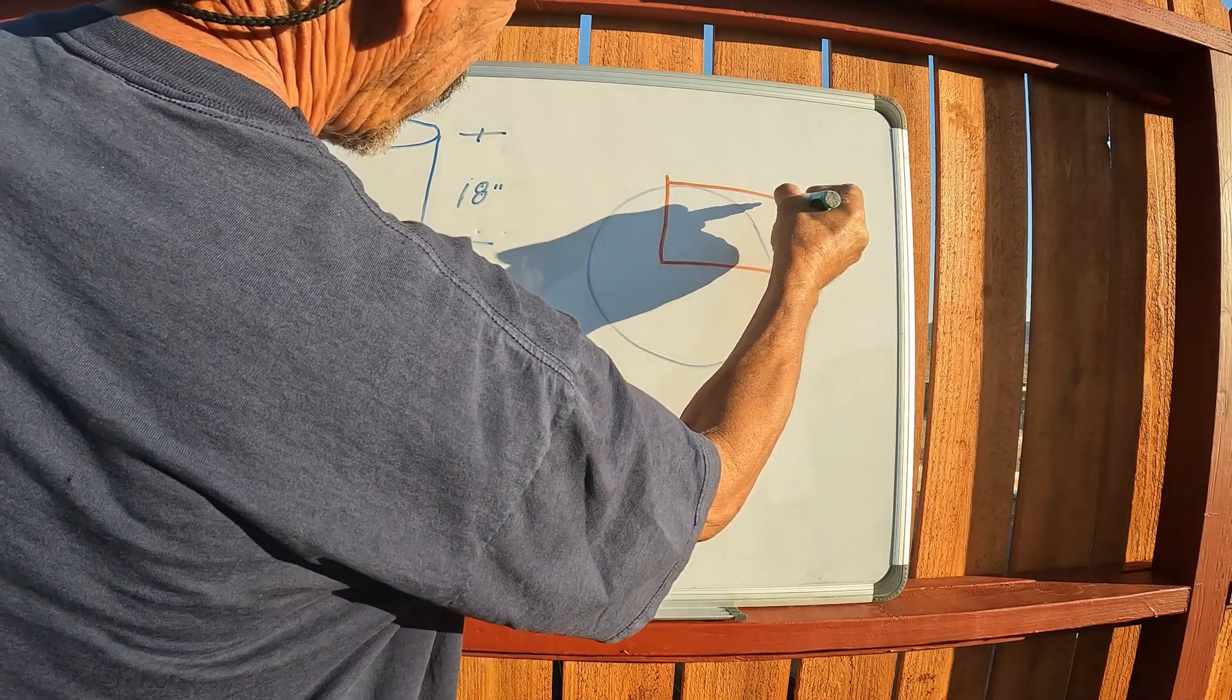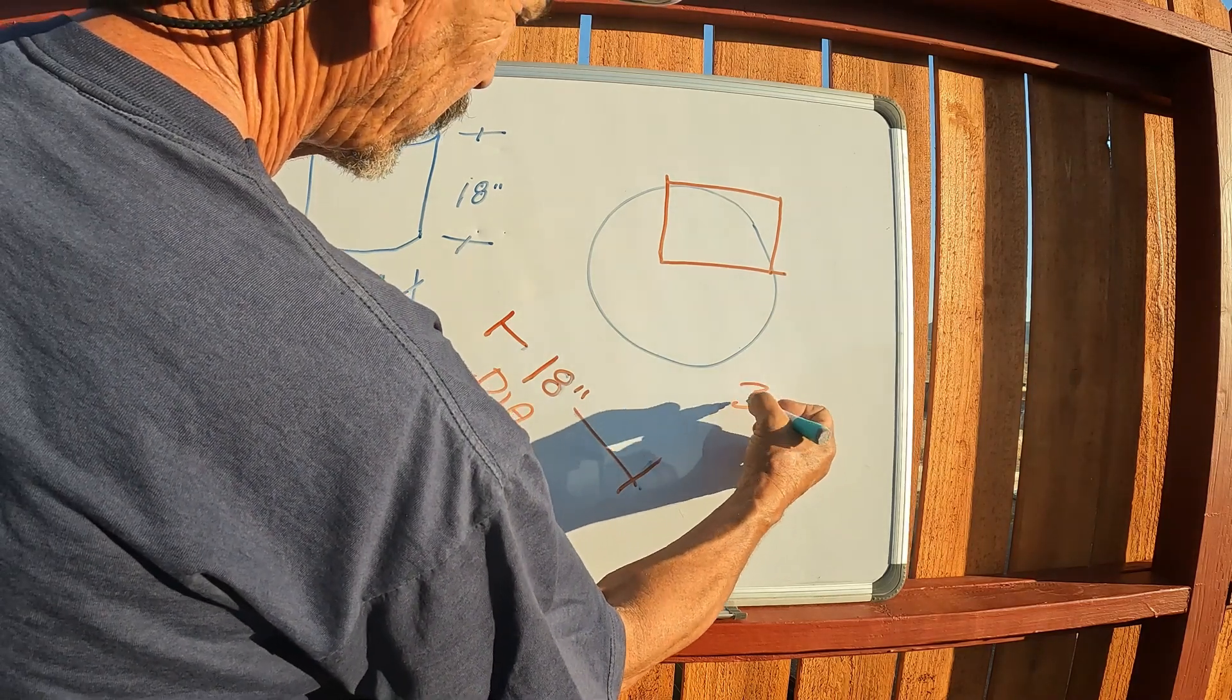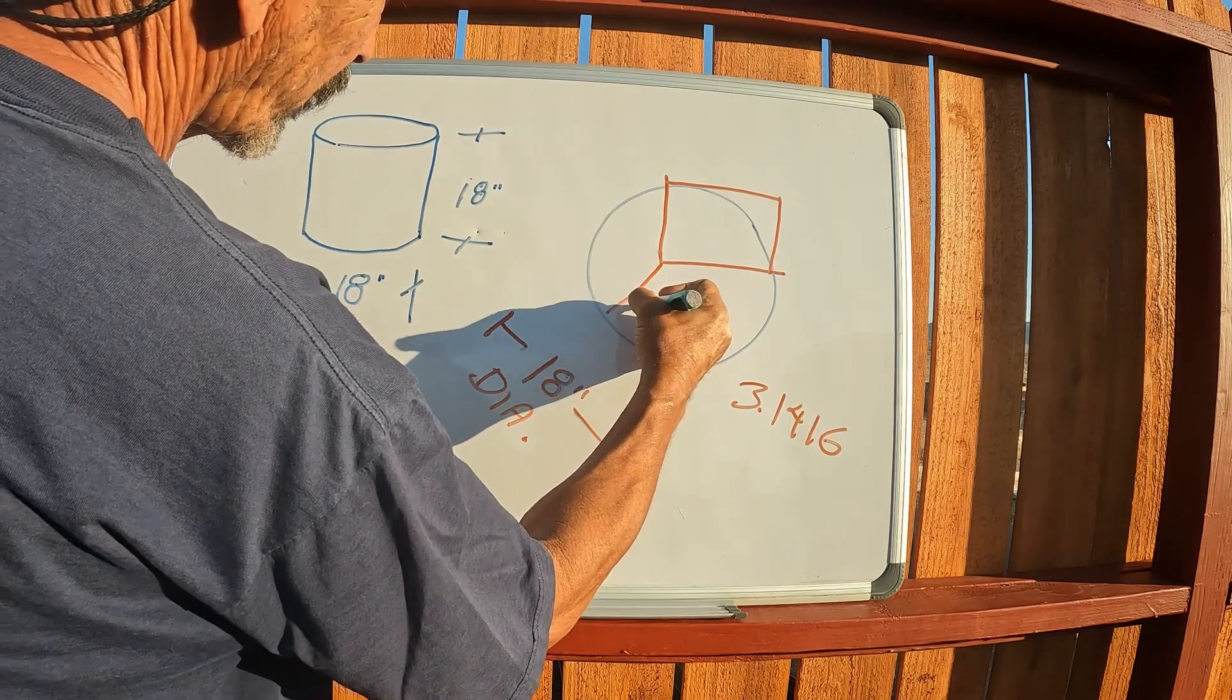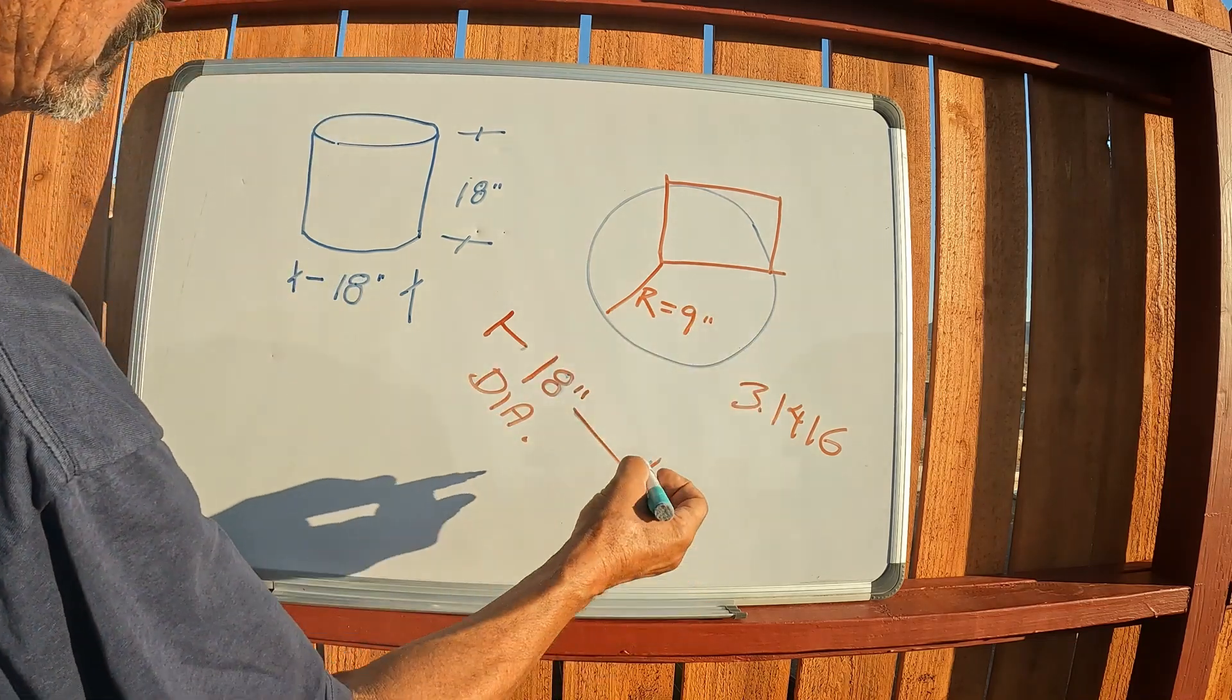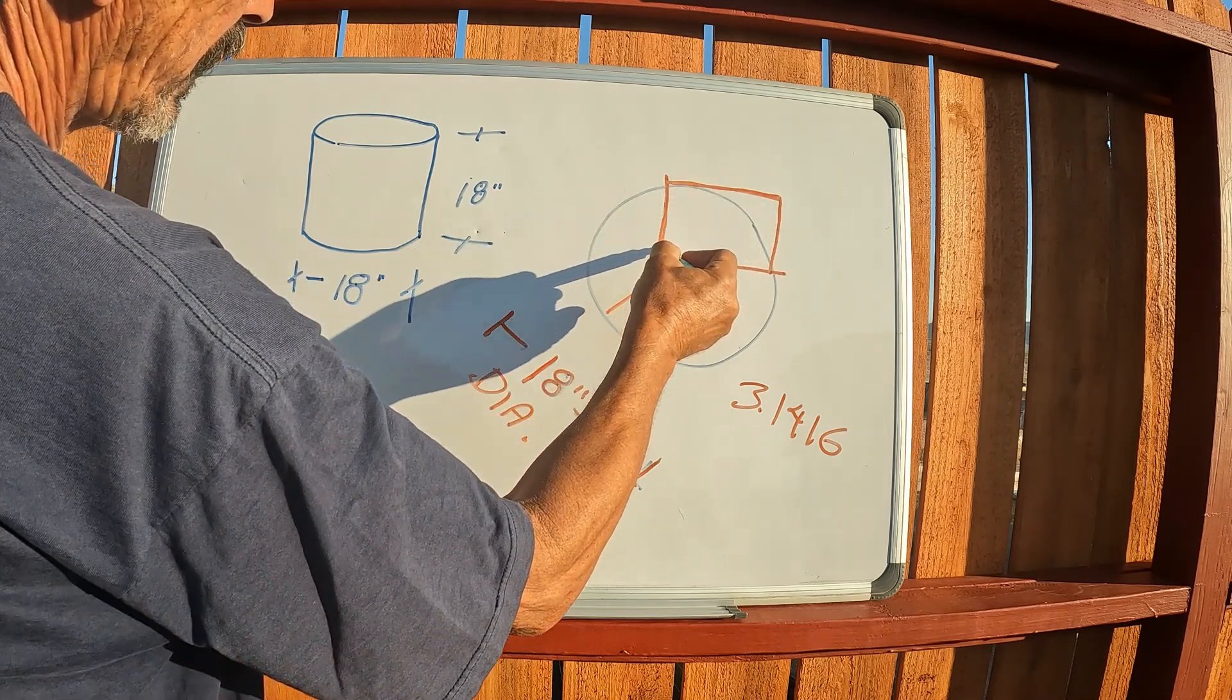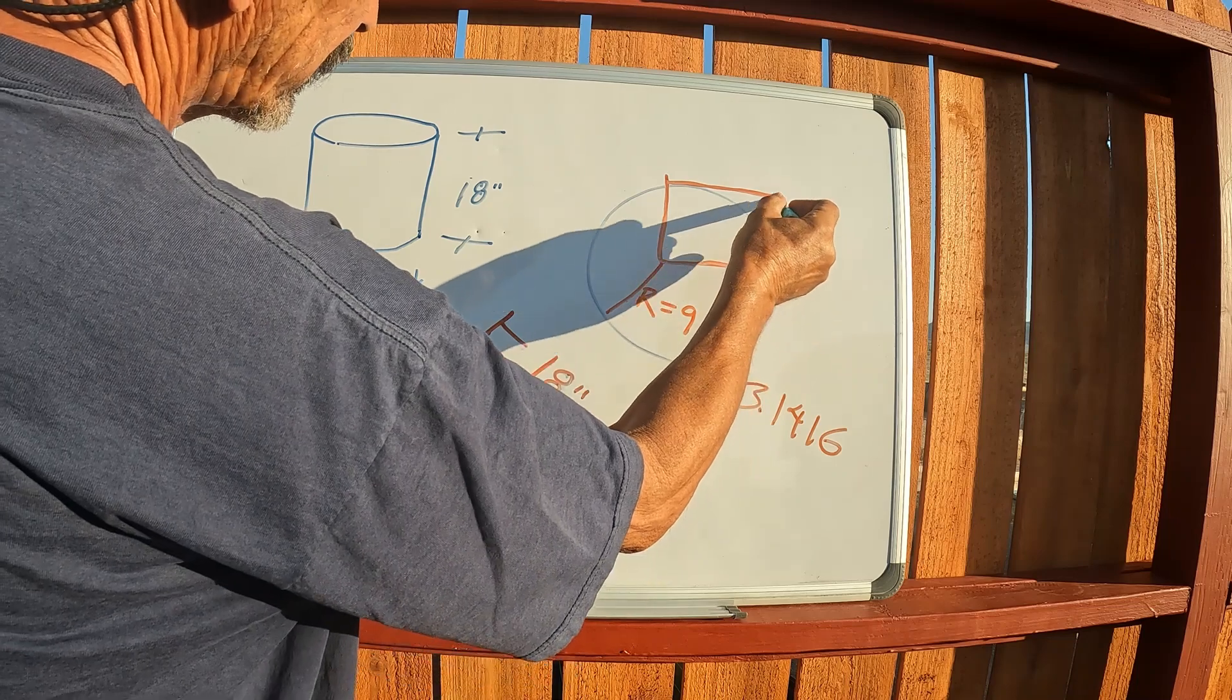To calculate the area of a circle you go pi, 3.1416 is close enough, r radius equals 9 inches, so then you calculate 9 times 9 for this section here.